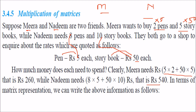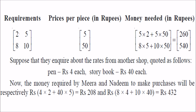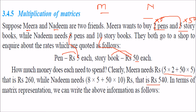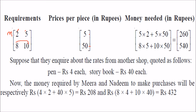When you want to represent this scenario in matrix form, the rates are five and fifty. Meera's requirement is two and five, and Nadeem's is eight and ten. So we write the requirement matrix as two, five and eight, ten. The price per piece is five and fifty. The computation is two into five plus five into fifty for Meera's total.